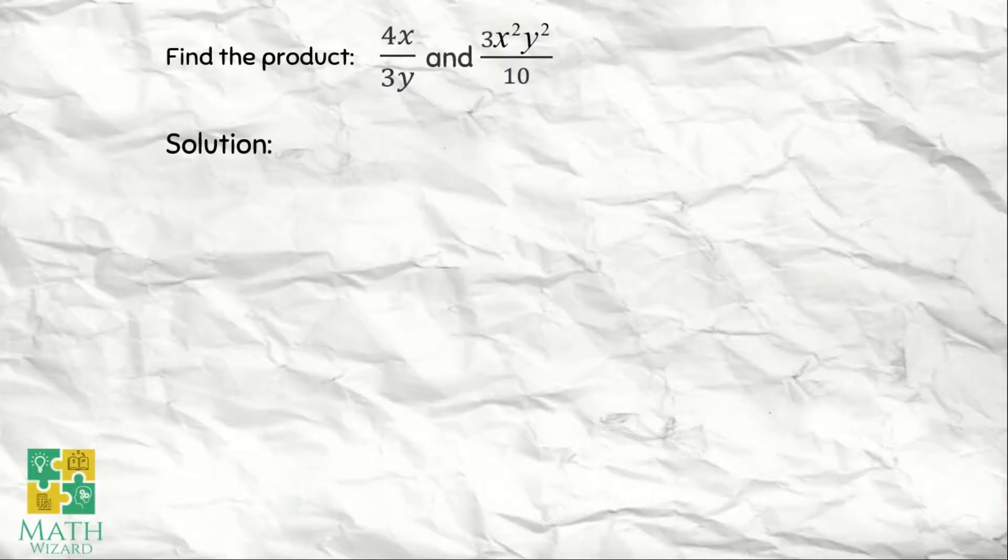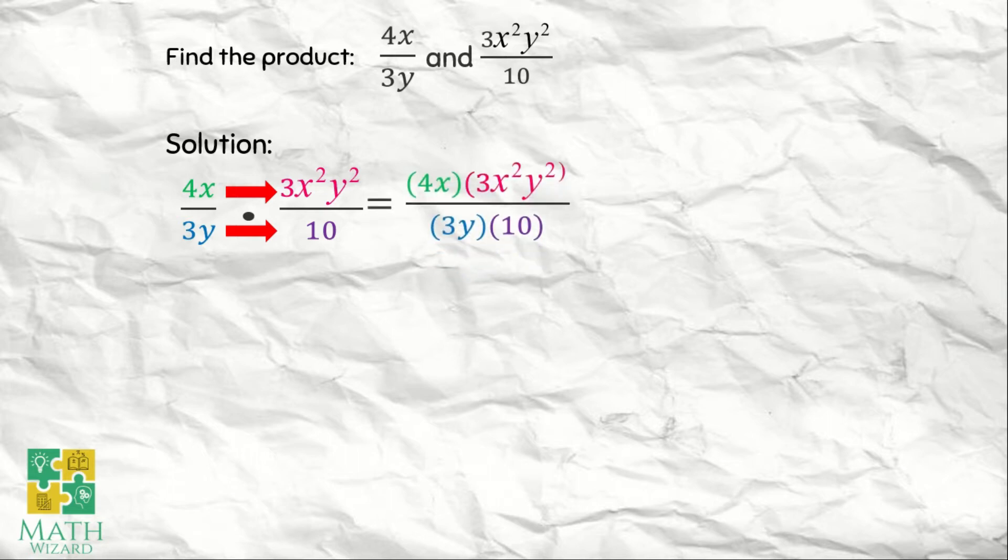Let's have our first example: 4x over 3y and 3x squared y squared over 10. We write it first. How do we multiply fractions? That's numerator times numerator, and denominator multiplied to the denominator. So this becomes 4x times 3x squared y squared over 3y times 10.